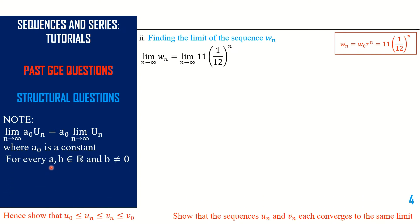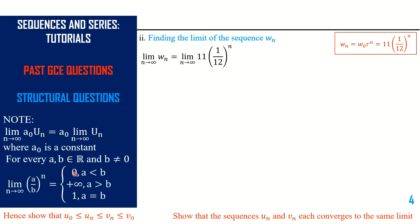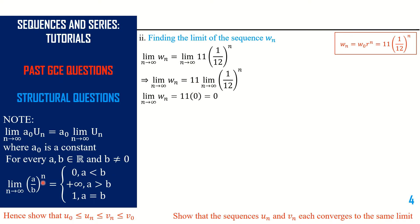The next hint: if you have two real numbers a and b with b ≠ 0, the limit as n tends to infinity of (a/b)^n is 0 if a < b, positive infinity if a > b, and 1 if a = b. We apply these two hints: first we take the 11 outside the limit, then since a = 1 and b = 12, we have a < b, so the limit gives us 0. Therefore the limit of w(n) = 11 × 0 = 0.